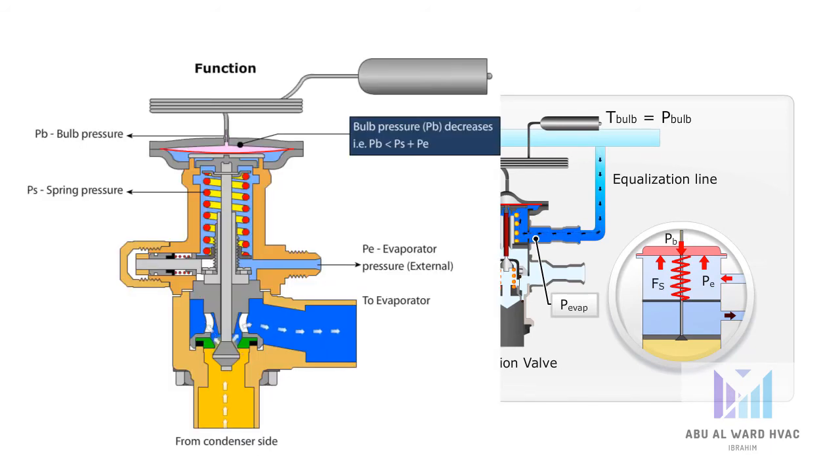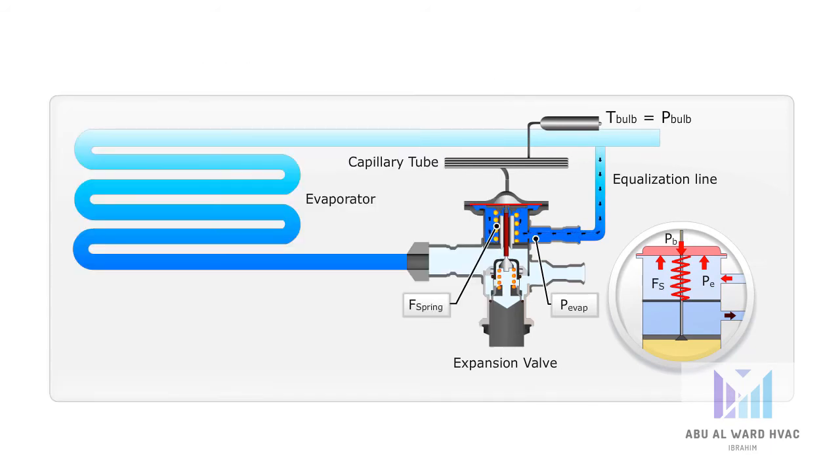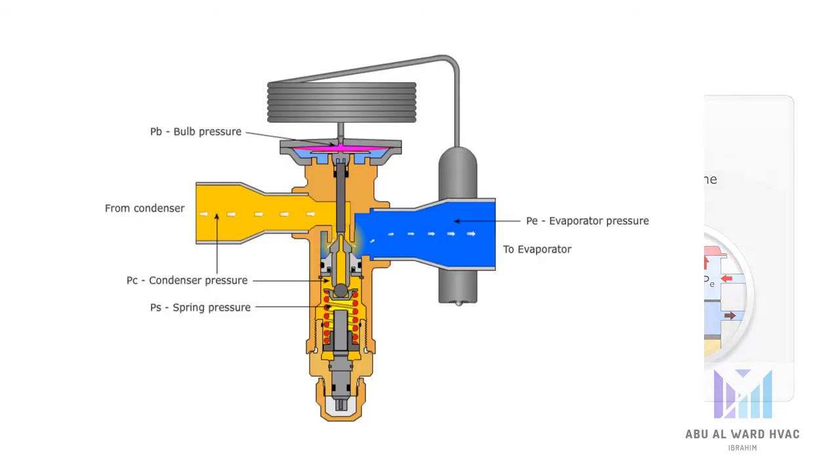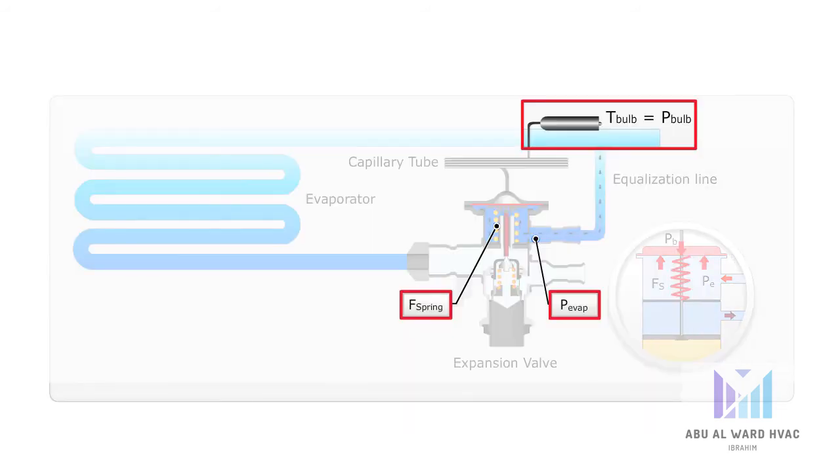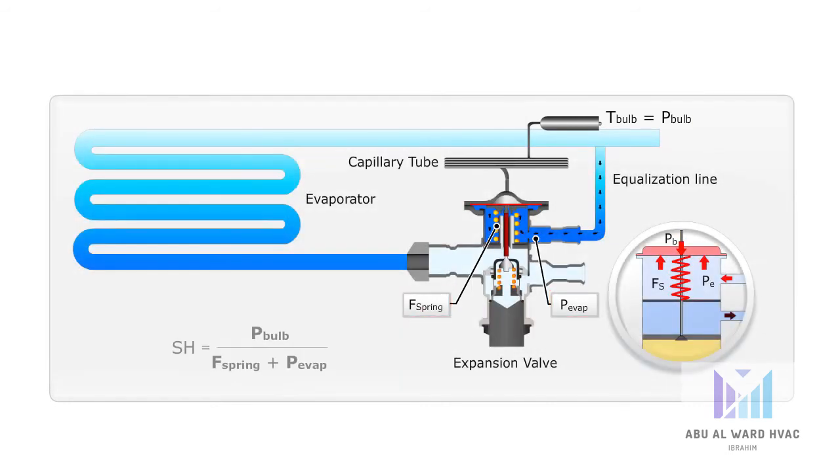Together with the valve main spring F-spring, the two pressures achieve a pressure balance which represents the requested superheat or SH at the evaporator outlet. Depending on the actual SH value, the TXV orifice will open or close.